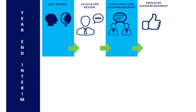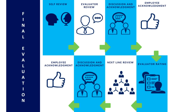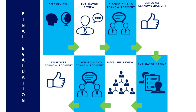The year-end interim and final evaluation are now combined into one review task in the system. The year-end interim will start with you. You will have the opportunity to provide feedback on your performance before your evaluator adds required comments to all competencies and goals. Once the year-end interim acknowledgements have been completed, the evaluator may start the final evaluation and rate your performance. You and your evaluator should then meet to discuss your performance before completing the acknowledgement and signature step. Year-end interim reviews and final rating should be completed by January 31.